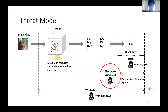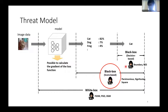We assume the following three models. When image data is input to the machine learning model, the confidence score is output. If the model is white-box, the attacker can compute the gradient for the input image. A black-box attack is a method of attacking using only the outputs of a model. There are two types of black-box attacks: in a score-based attack, all classes of confidence score can be used; in a decision-based attack, only the most confident class label can be used.